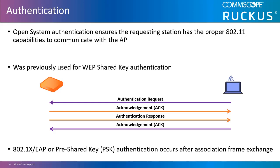Since WEP is no longer used, it cannot cause a station to fail the open system authentication process. If a station does not pass open system authentication, the AP may be rejecting the client due to a maximum client connection or capacity limit configured on the access point, or some incompatibility between the access point and the client, such as data rates or modulation used. Open system authentication is performed prior to either pre-shared key or 802.1X EAP authentication.